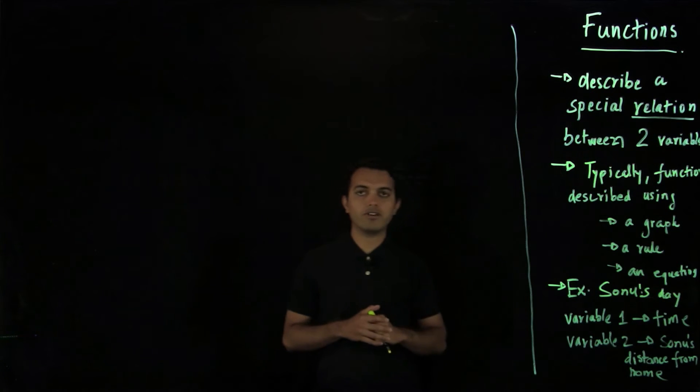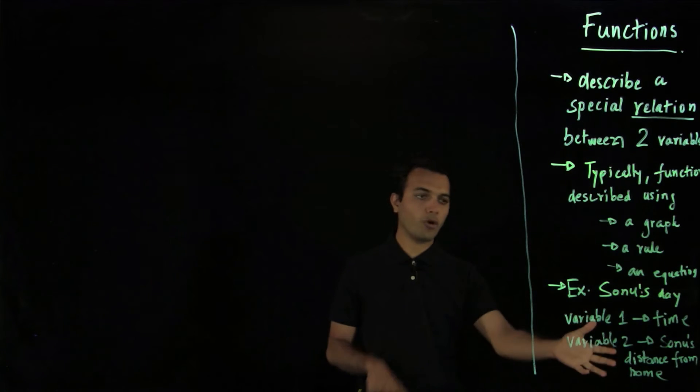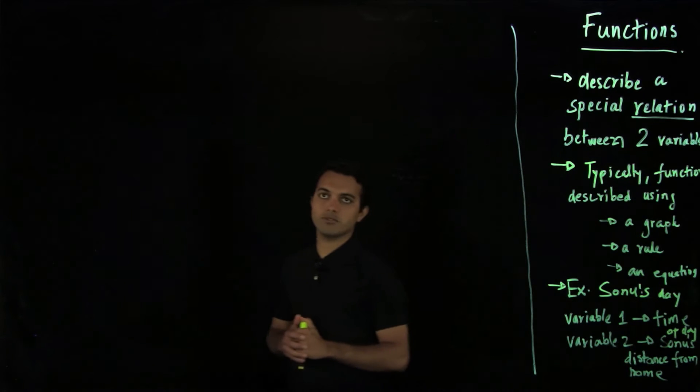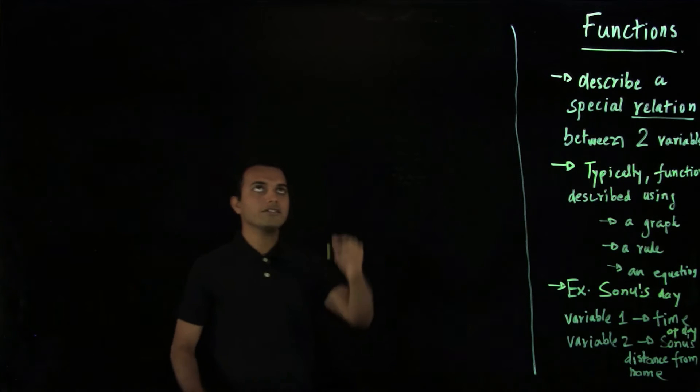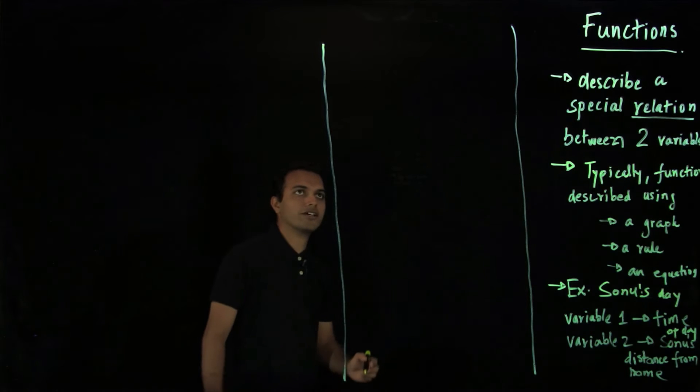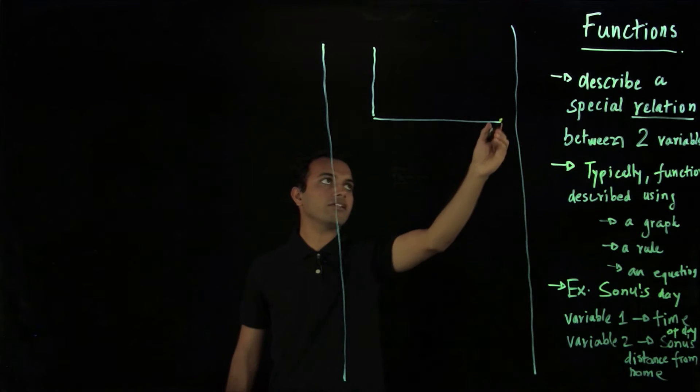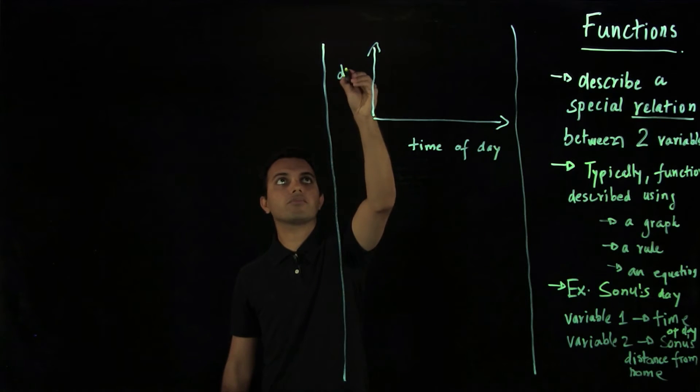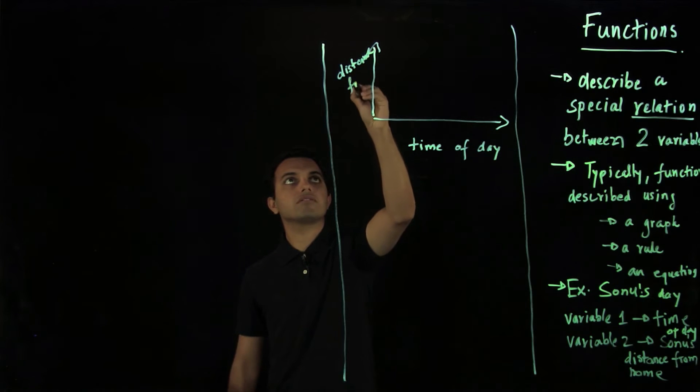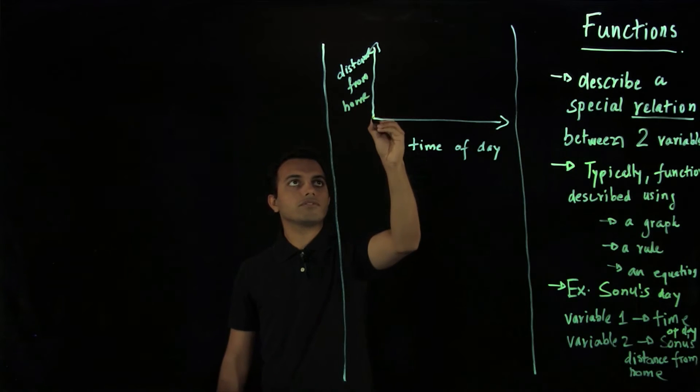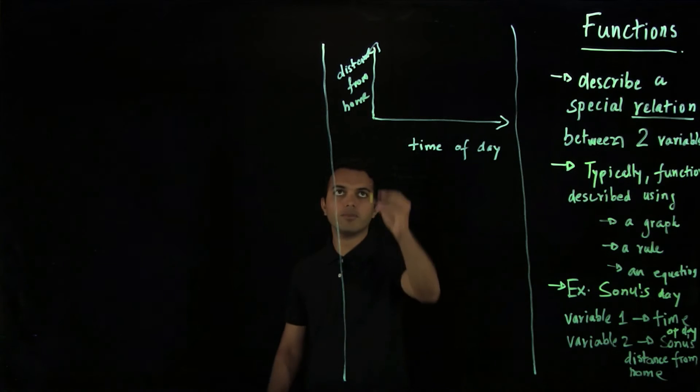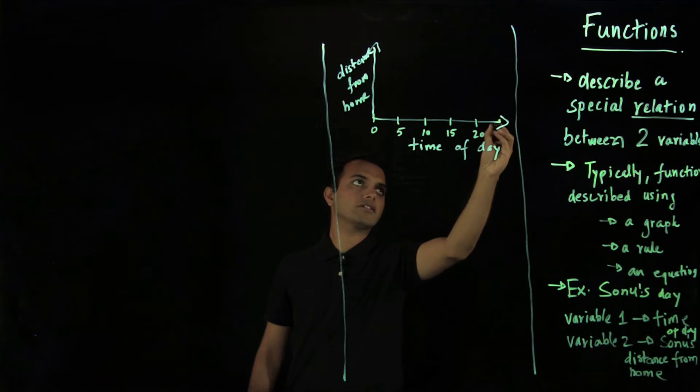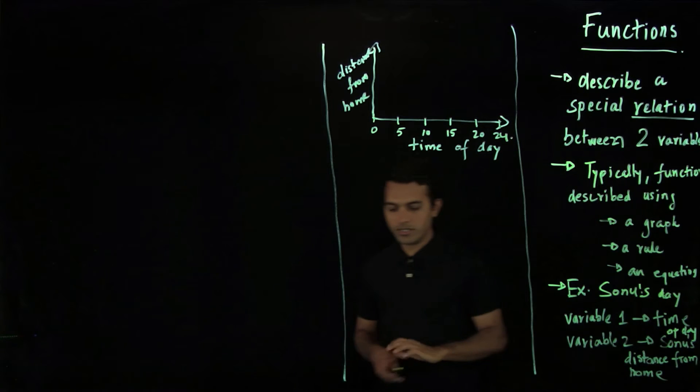And variable two will be Sonu's distance from home. Now let us go to our first definition that we wrote. Function is a special relation between two variables and here what we have are two variables of interest, one is time of the day and how far Sonu is from his home. So let's try to make a plot for a typical day.